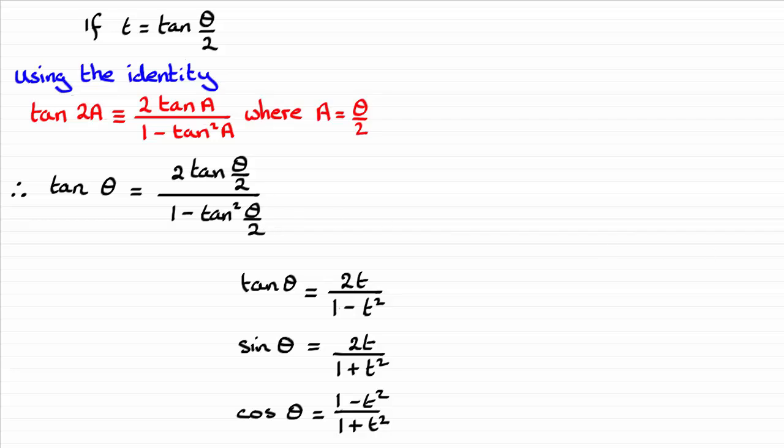And if I substitute for t for tan theta upon 2, we end up with 2t all over 1 minus t squared.